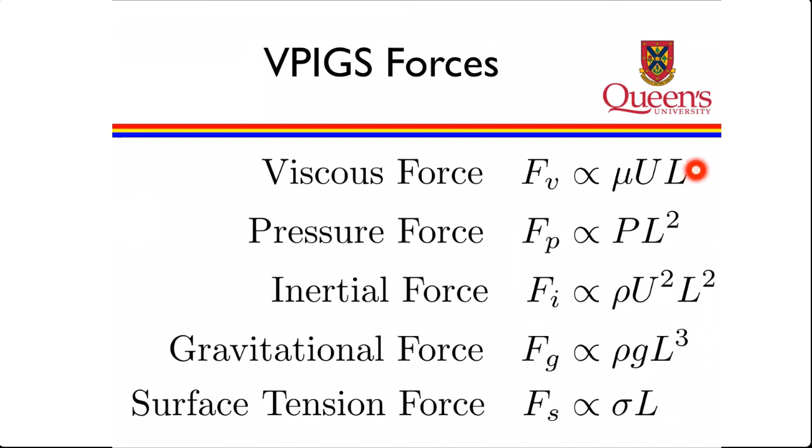Some just to a single length scale, some to the length scale squared, some to the length scale cubed. Some of them scale up with velocity, or with velocity squared. Others scale with things like surface tension, gravitation, density, pressure. So we expect all of these to change in different ways as we change the size of our flow. But we could look at the ratios of them to see which ones we expect to be important, and when we expect them to be important.